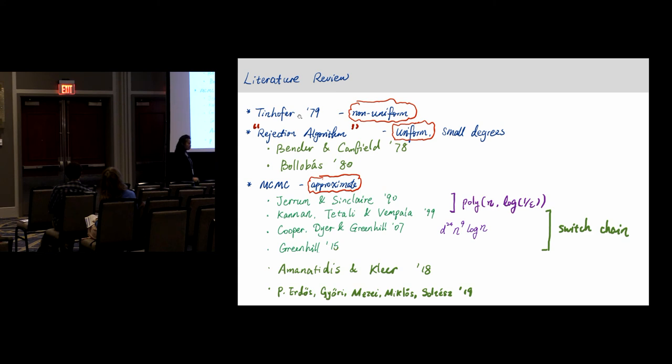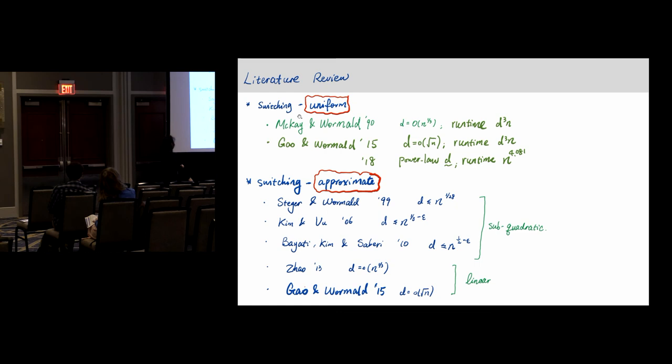The other line of research started from McKay and Wormald, as I said. It's also a Markov chain based algorithm, but it's not Monte Carlo, it's actually a Las Vegas algorithm. You will see that the runtime, of course Las Vegas we talk about expected runtime, is much faster. But even though the degree sequence that you can handle is much more restrictive, so the first paper handles regular graphs where d is only up to n to the 1/3.